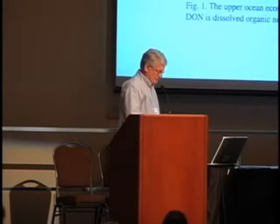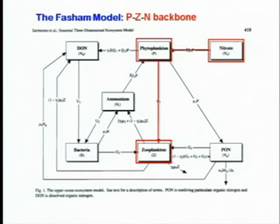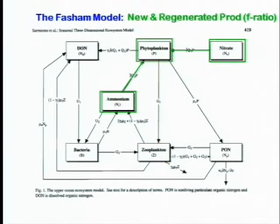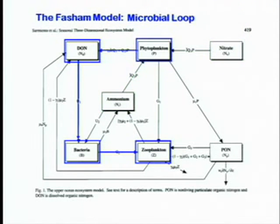To summarize: the PZN backbone goes back all the way to Riley and forward to John Steele, Wroblewski, and many others. New and regenerated production — the flux of nitrogen in its two main forms — was the real original motivation for doing this. And then the microbial loop, showing how dissolved organic matter lost from phytoplankton and zooplankton is harvested by bacteria and how that returns to the food web.